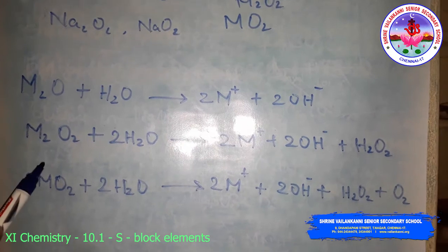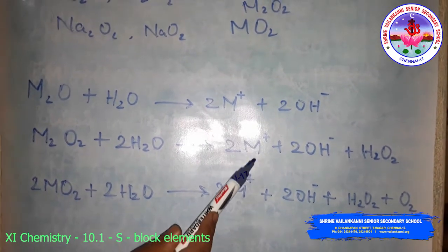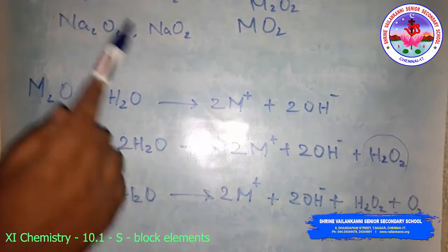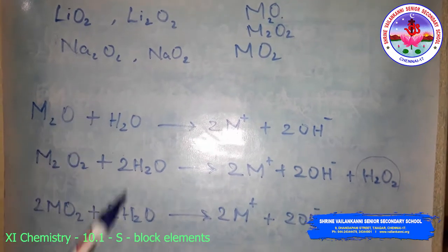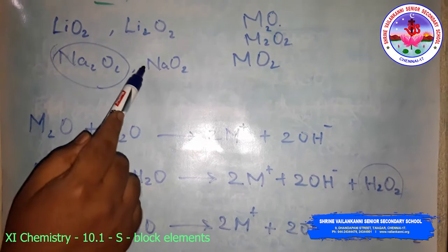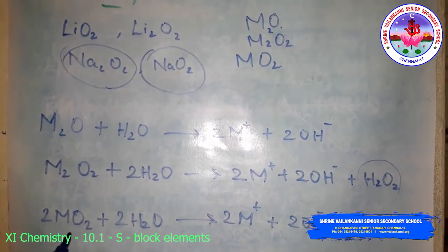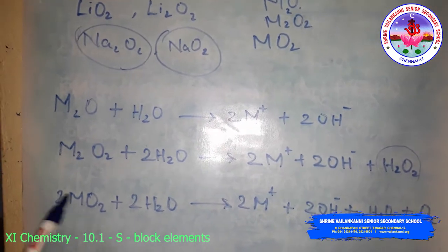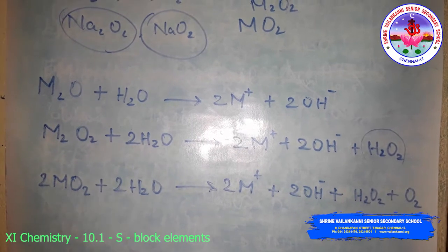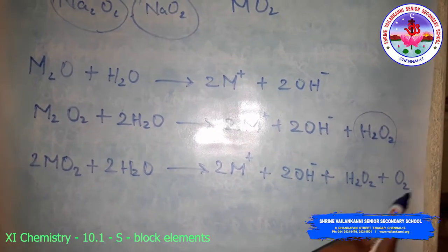When peroxides react, they undergo hydrolysis to form 2M+ and 2OH−, and peroxide is also produced. Sodium peroxide can give some superoxide as well. The superoxide reacts with water through hydrolysis to form peroxide and oxygen.